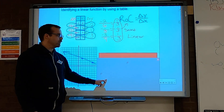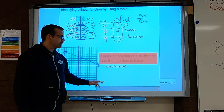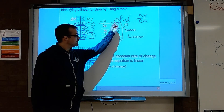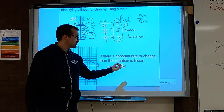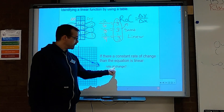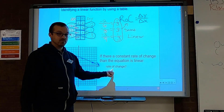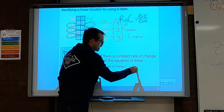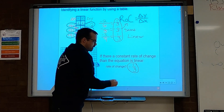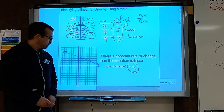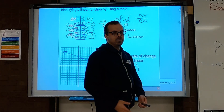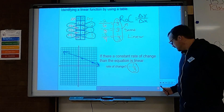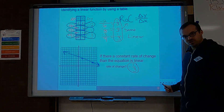So is this table linear? Yes, because the rate of change is the same — negative one-third. If there is a constant rate of change that doesn't change, then the equation is linear. Go ahead and try the problems below, follow the same example, and you should do well.